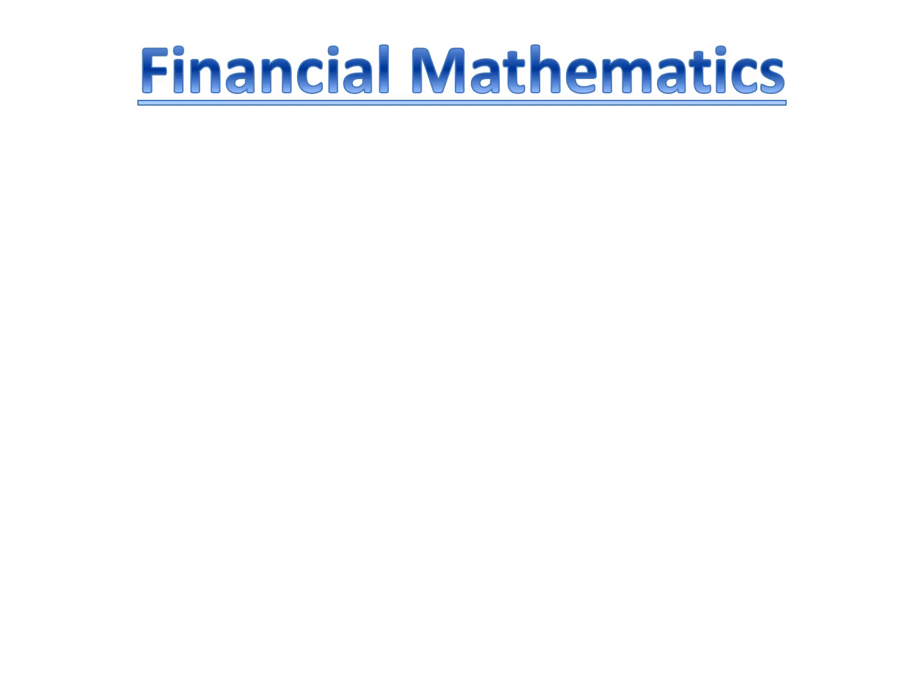This is your first lesson on financial mathematics. To start with, we're going to look at two different formulas. The first formula is the simple interest formula, where you earn exactly the same amount of interest every single year or every single month. The monetary value is exactly the same every year.